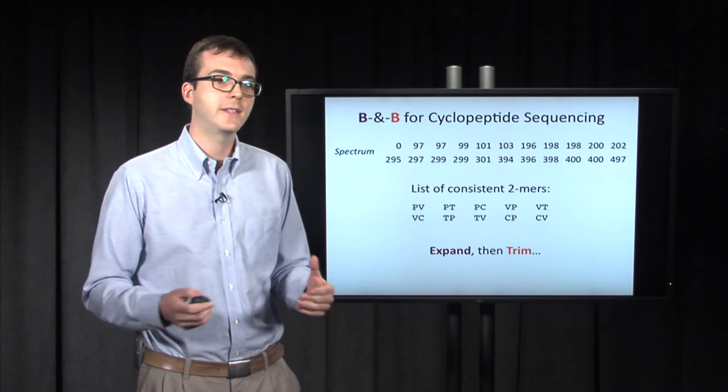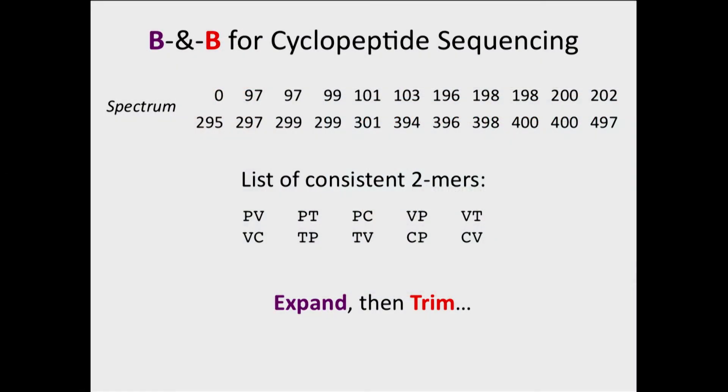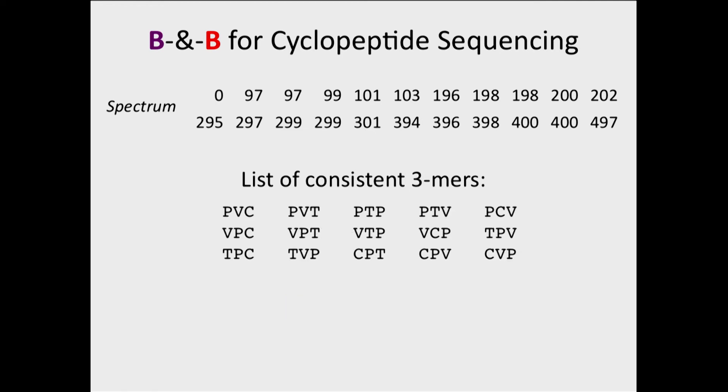So let's do the exact same thing. Let's expand each of these in all 18 possible directions. We'll get now 180 different 3-mer peptides, and then let's check whether or not each one is consistent, and we'll trim it down. After we do this, we go from 180 to 15, and we say, okay, this is going well. We're preventing these peptides from growing crazily, and so we expand them, and then we'll trim.